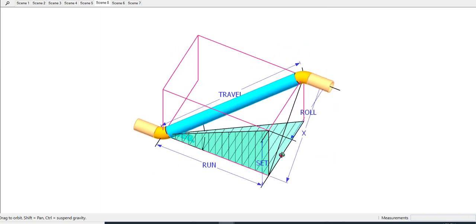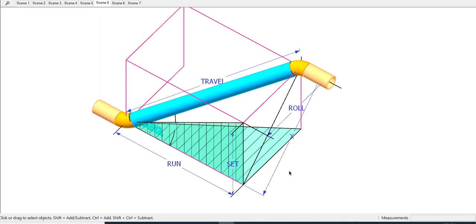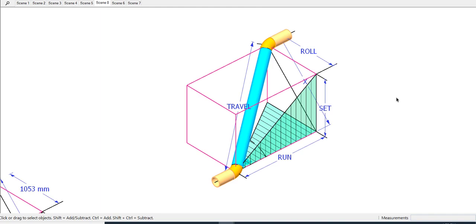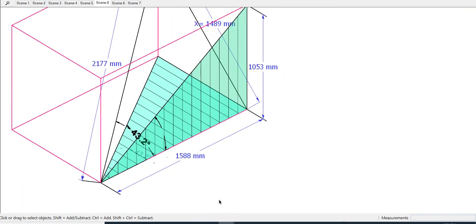The first thing to do is to calculate the value of X. The formula is X equals root of the sum of the squares of the roll, set, and the run. Confusing? No problem.